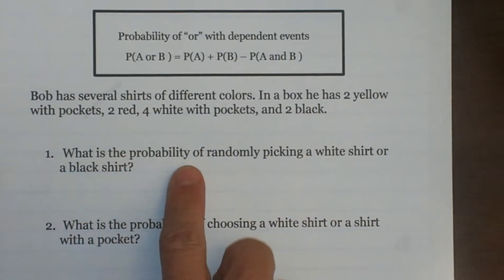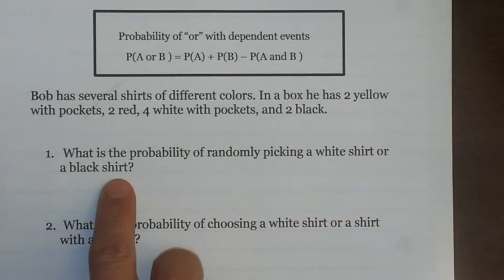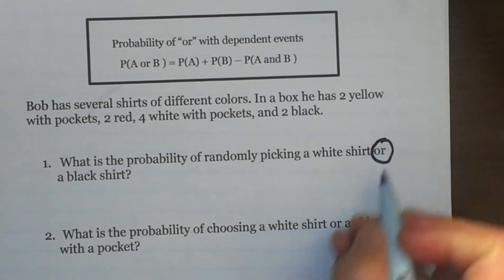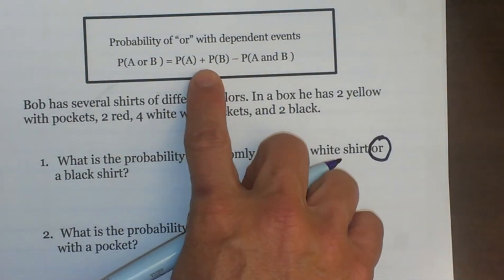What is the probability of randomly picking a white shirt or a black shirt? Since this is an OR problem and I like to circle that to remind myself, OR means I am going to add my probabilities together.